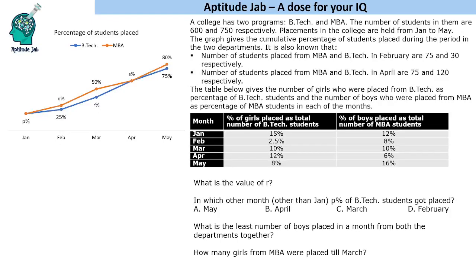Hello everyone, welcome to Aptitude JAV. This is a set based on a line graph. A college has two programs, VTech and MBA. The number of students in them are 600 and 750 respectively. Placements are held from January to May and this graph gives the cumulative percentage of students placed during that period in the two departments. A table gives the number of girls placed from VTech as a percentage of VTech students and the number of boys placed from MBA as a percentage of MBA students in each of the months.